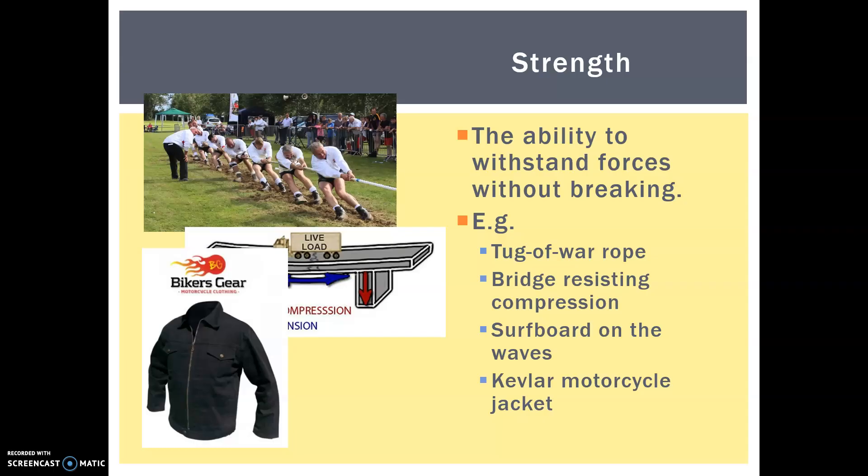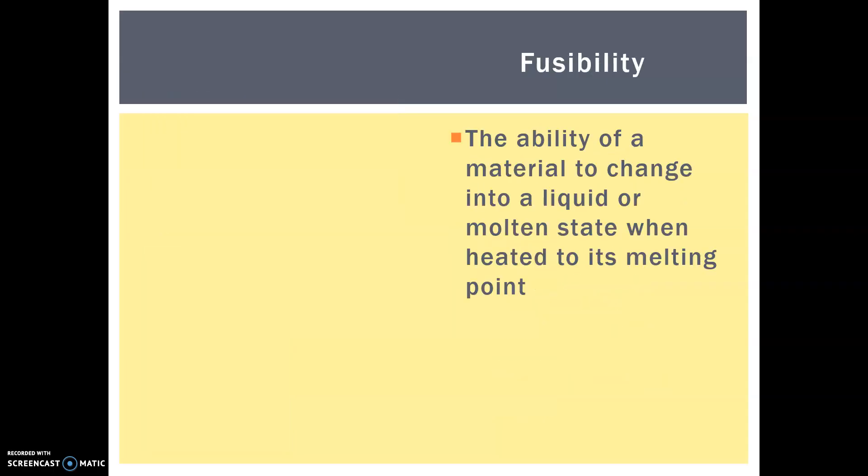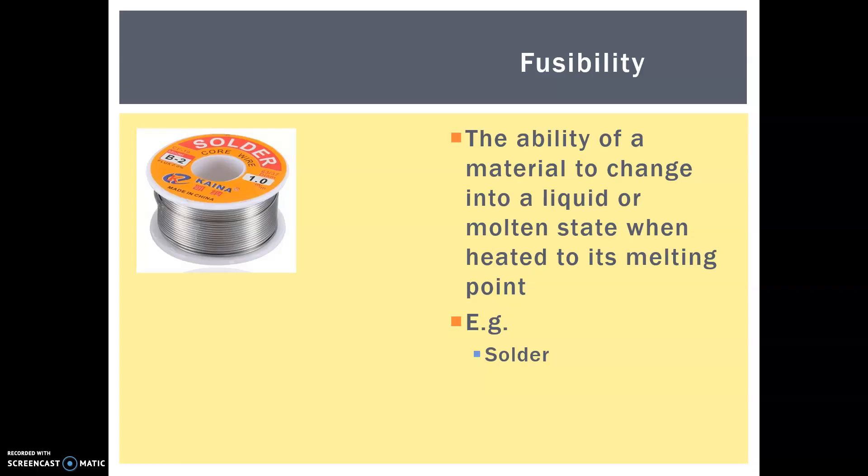So they need to be able to withstand not only abrasion but also impact should a cyclist come off during an accident. Fusibility, this is a tricky one. This is the ability of a material to change into a liquid or molten state when it's heated to its melting point. You might be thinking what's this really for, but this is very much during the manufacturing stage of making a product.